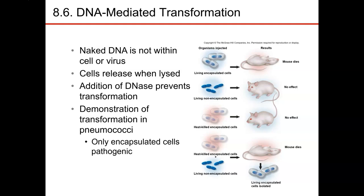He thought maybe if he killed the bacteria and just gave the mice the capsule, they would still get sick, because the capsule must have the pathogenicity or toxicity. So he infected mice with the heat-killed encapsulated cells, and again the mice did not die. Then he thought, if he took the heat-killed encapsulated cells and rough cells that were not killed — both strains that didn't cause death — what would happen? Because now you have the living cell, but instead of the living cell being inside the capsule, they're on the outside.